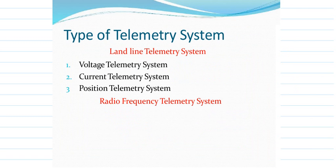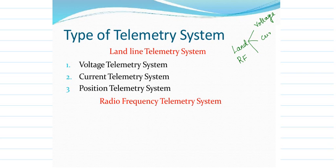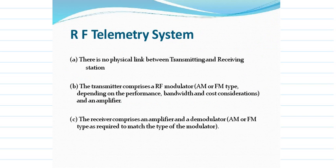The types of telemetry systems based on the signal concept are: first, landline telemetry, and second, radio frequency telemetry. In landline telemetry there are three signal types: voltage, current, and position. Based on these three — position, voltage, and current — it comes under landline telemetry. The next type is radio frequency telemetry, which is based on range.